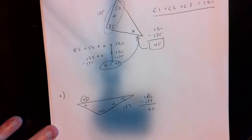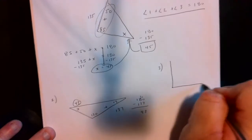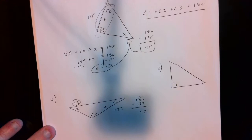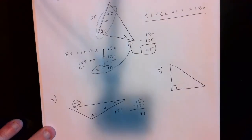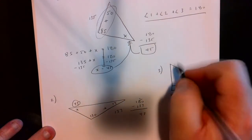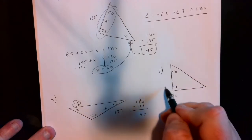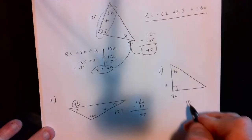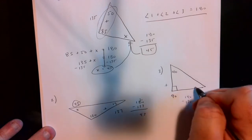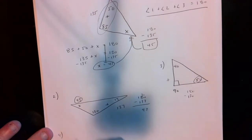Let's remember some special cases. If a triangle has a little box — a small square — at one of its corners, that means it's 90 degrees. So if they give us a box and this angle up here is 40, then 90 plus 40 is 130, and 180 minus 130 makes the missing angle 50.